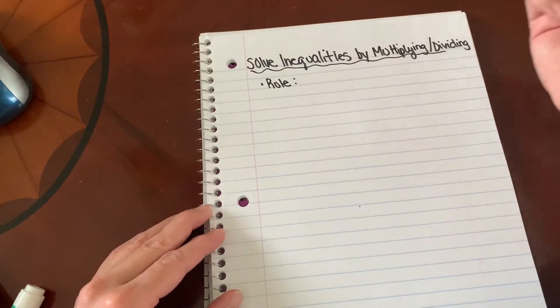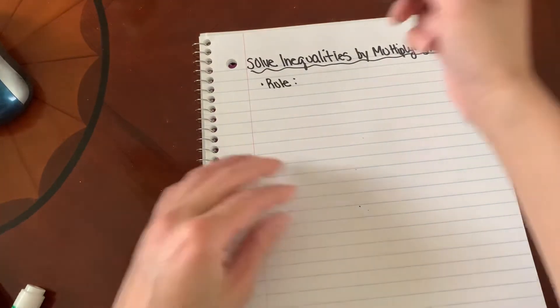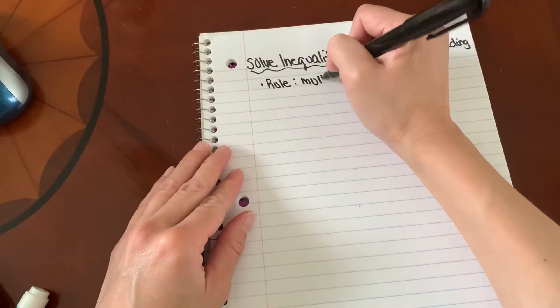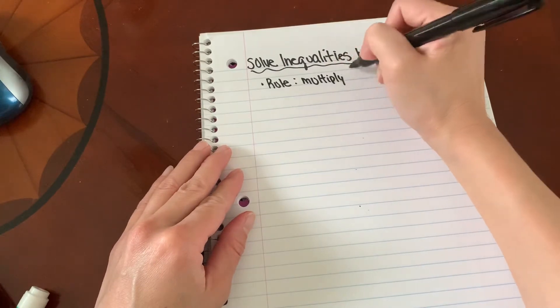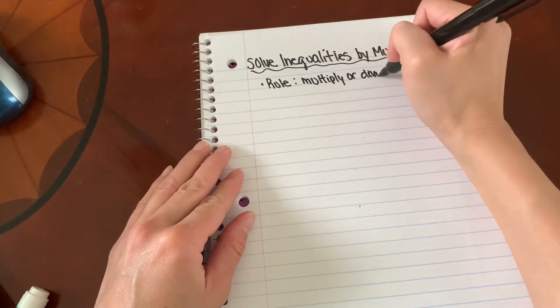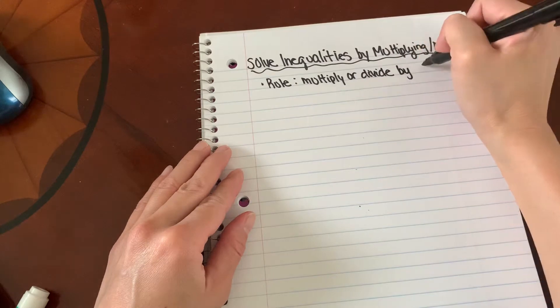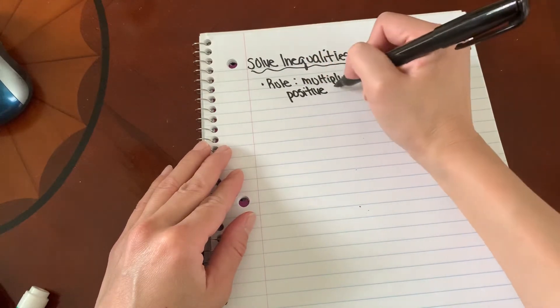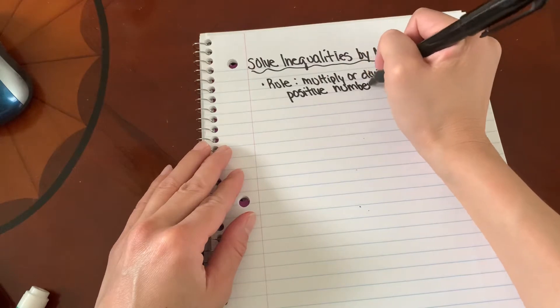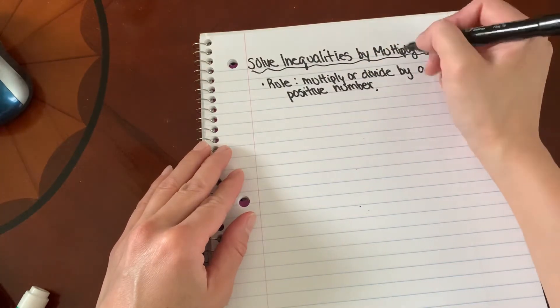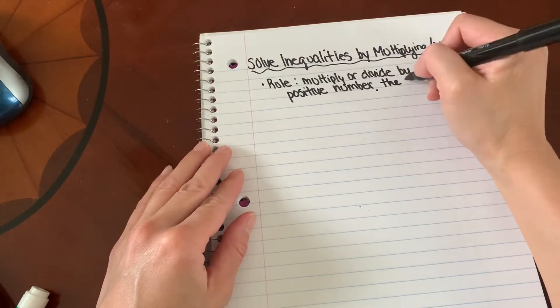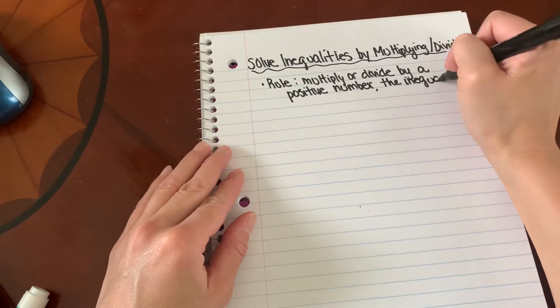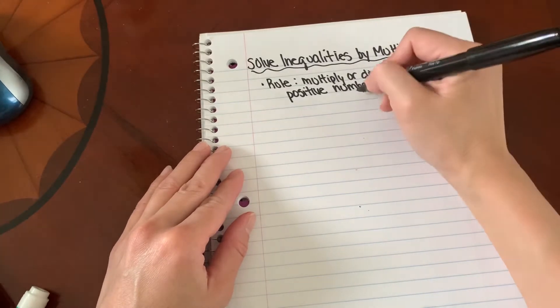The first rule when you solve inequalities is if you multiply or divide by a positive number, the inequality remains true.